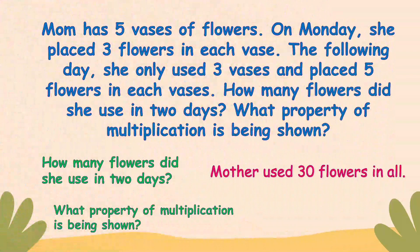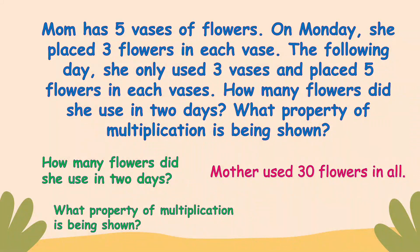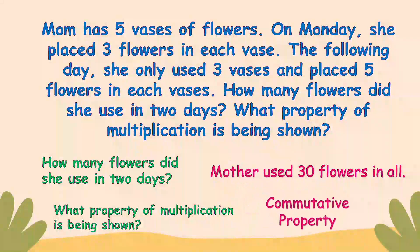Let's go back to the problem of today. What property of multiplication is being shown? Three times five equals 15, and five times three equals 15. It is the commutative property of multiplication.